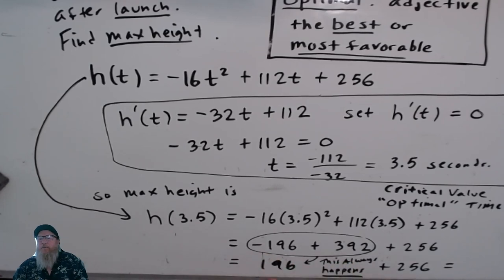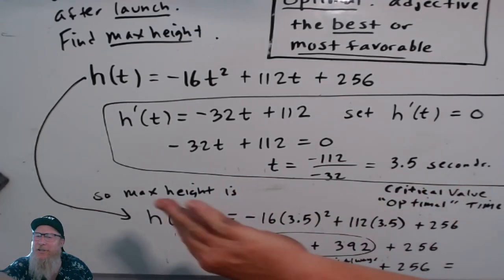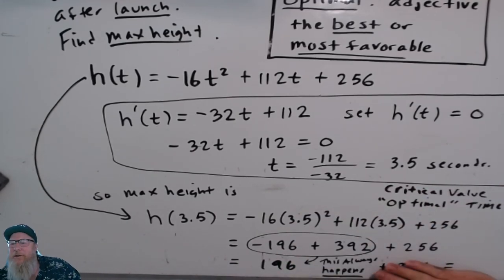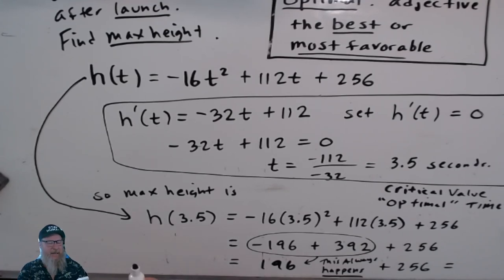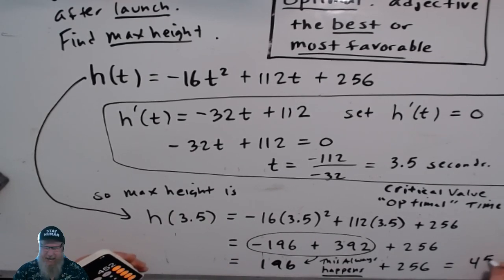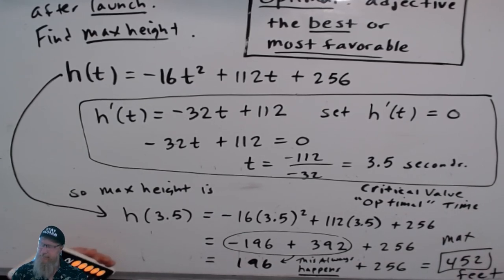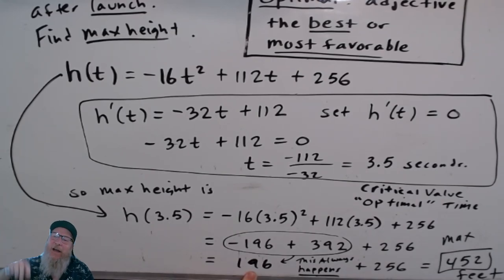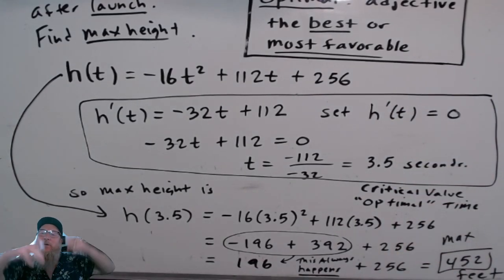So we have 392 minus 196, which is 196, and then plus the 256-foot cliff. If we were back in Oklahoma on flat ground, there would be no 256 — the answer would just be 196 feet. But since we're throwing the pumpkin off a cliff, it's 196 plus 256. The maximum height is 452 feet above the ground — it's actually only 196 feet above the edge of the cliff, with that extra 256 feet it falls to the ground. Smashing pumpkins!